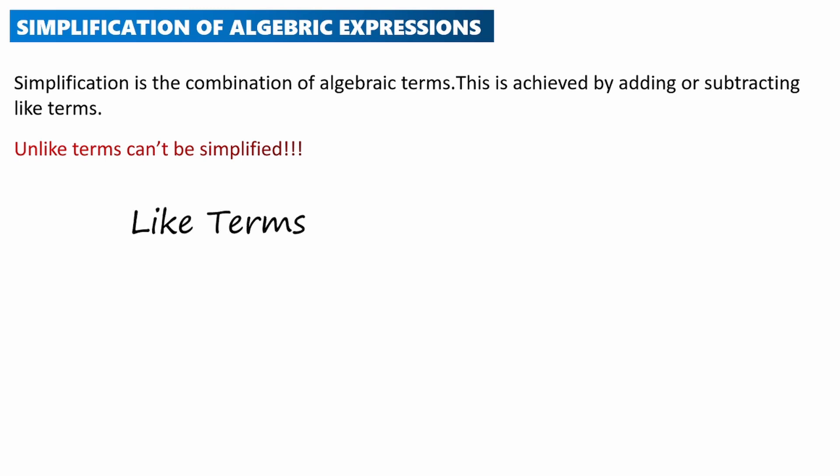Like terms are expressions with the same variables with the same powers. Here's an example: 10x and 5x. These two expressions are like because they have the same variable x with the same power — in this case just x, which you can say is x to the power of 1.